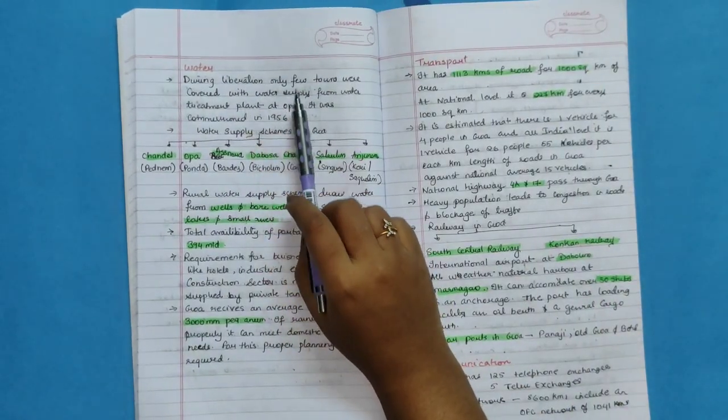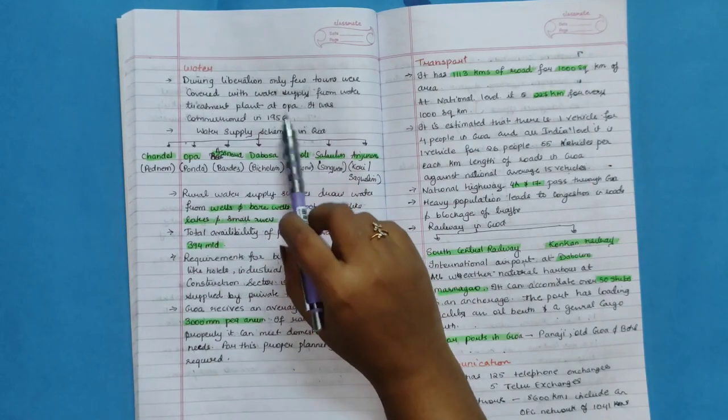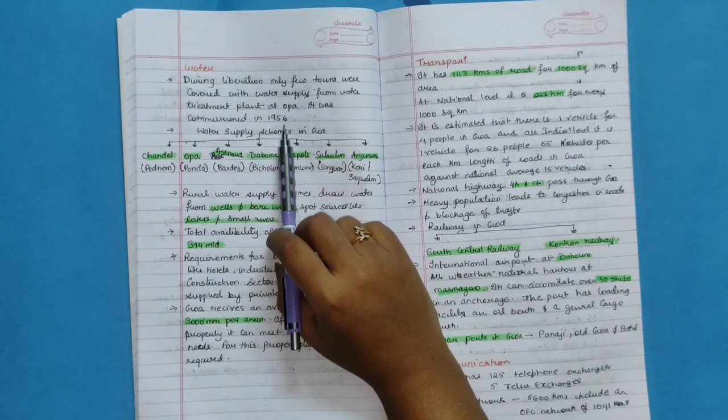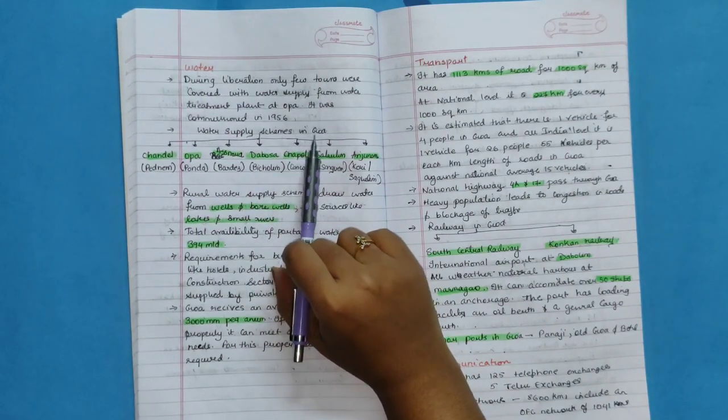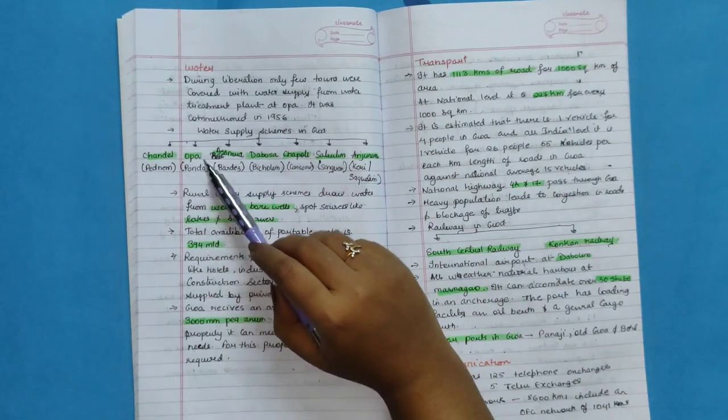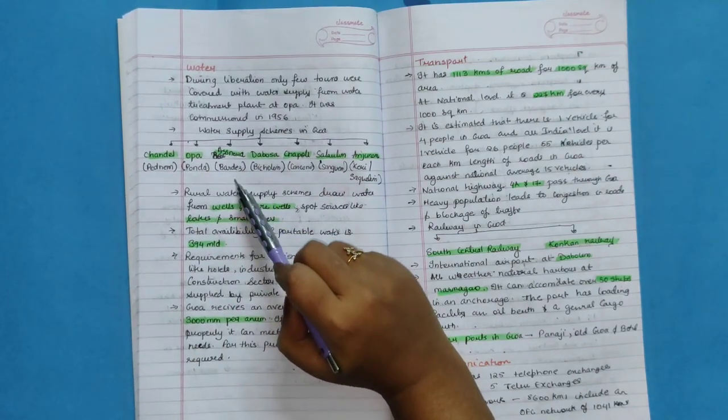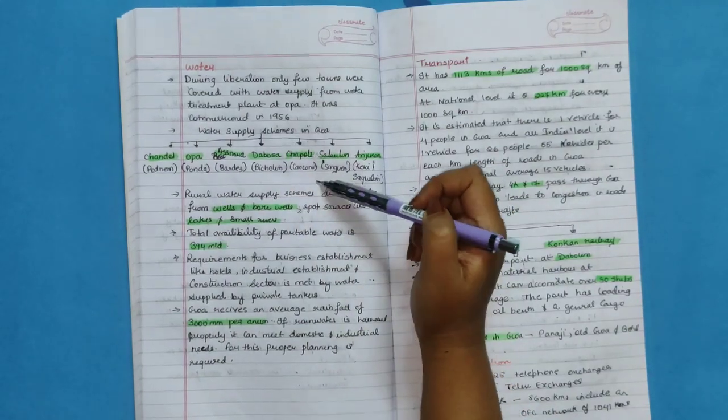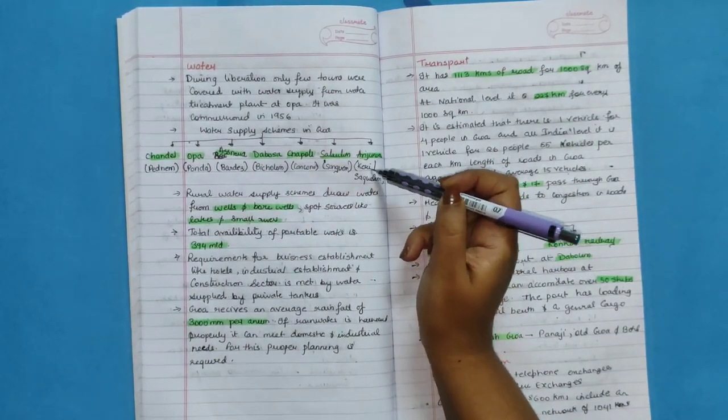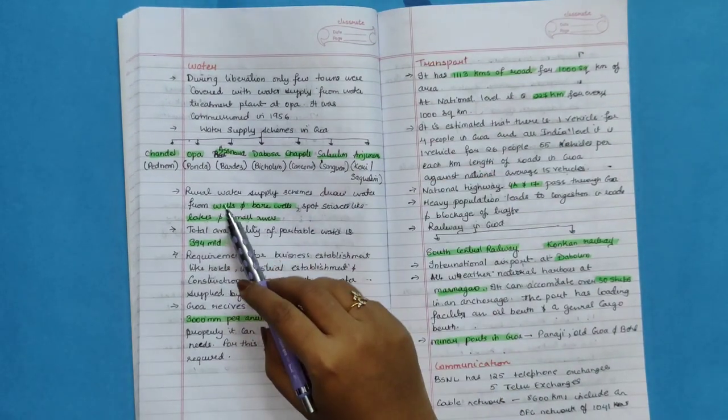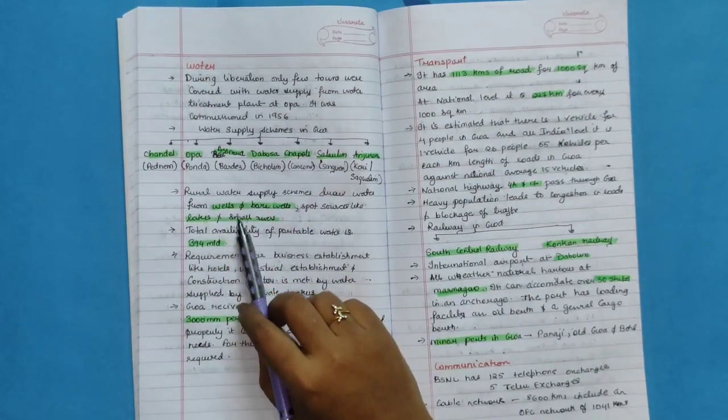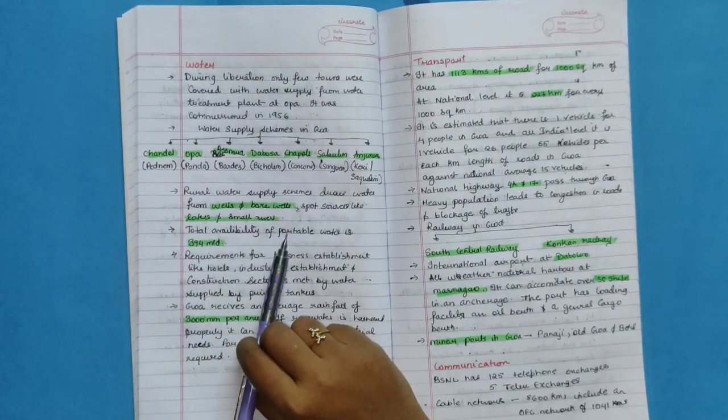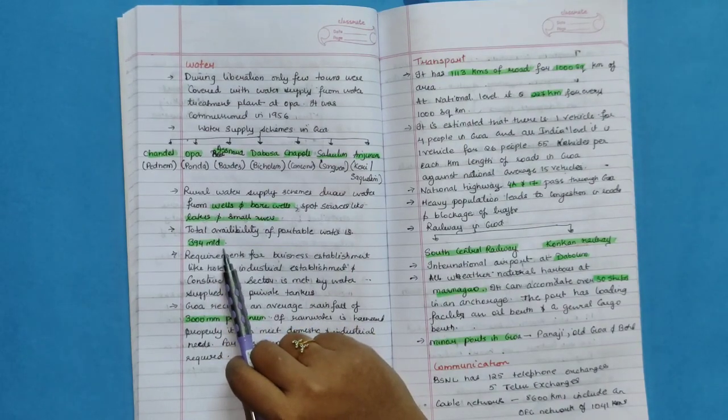Water. During liberation, only few towns were covered with water supply from water treatment plant at Assonora. It was commissioned in 1956. Water supply schemes in Goa at Chandel, Pednem, Assonora, Ponda, Assonora, Bardez area, Dudsagar, Bicholim, Chopdem, Ganjem, Salaulim, Sangem, Anjunem, Keri and Sakhali. Rural water supply schemes draw water from wells and bore wells, spot sources like lakes and small rivers. Total availability of potable water is 394 million liters per day. Requirement for business establishment like hotels, industries, establishment and construction sector is met by water supply by private tankers.